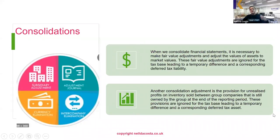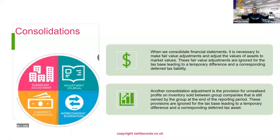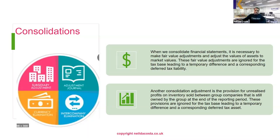What about consolidation? Groups of companies have to prepare consolidated financial statements, bringing the accounts of all different companies together. We need to make subsidiary adjustments, eliminate intragroup balances, and so on. When we consolidate, we make fair value adjustments and adjust the values of assets to market values. But these fair value adjustments are ignored in computing the tax base, leading to a temporary difference and a corresponding deferred tax liability.